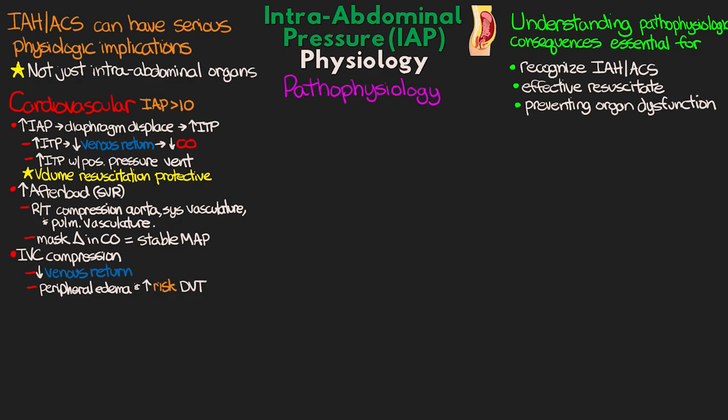Interestingly, we do actually see paradoxical CVP and pulmonary artery occlusive pressure values. Given the compression on these vessels, decreased venous return, and decreased cardiac output, we'd normally expect to see decreased CVP and PAOP. However, with IAH and ACS, we can actually see an increase in these values due to the increased intra-thoracic pressure, which contributes to these values being higher than we would normally expect.